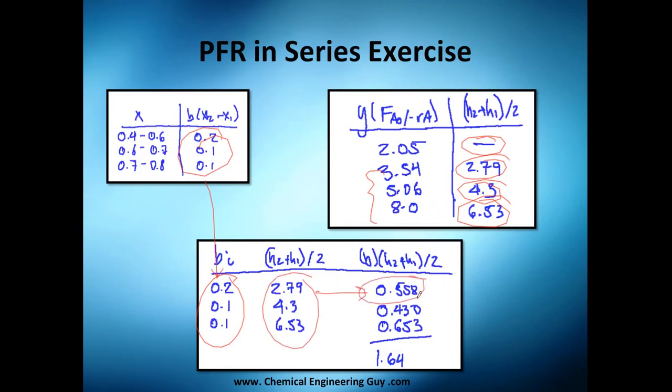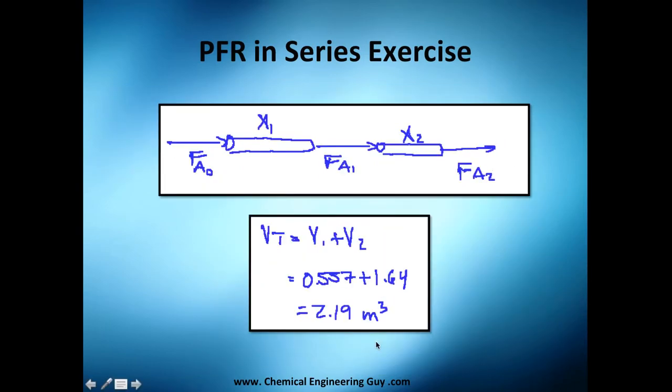I got the area of each of my, let's say, trapezoids. It will be something like this. Trapezoid 1, 2 and 3. And if I add them, I will get the area needed. So as you can see, I got the value of volume 1 and volume 2. This is 0.55 and this is 1.64. So in total, I got 2.19 cubic meters.